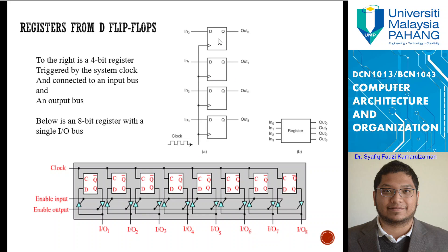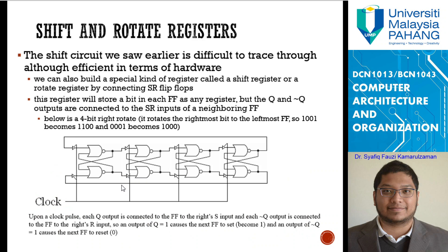Here is a 4-bit register triggered by the system clock and connected to an input bus and an output bus. The left side is the input, the right side is the output. When the clock comes in, data will be stored according to what the input inserted in. Here is the clock coming in, and here is the enable input and enable output. This one, in this case, is an 8-bit register with a single I/O bus.